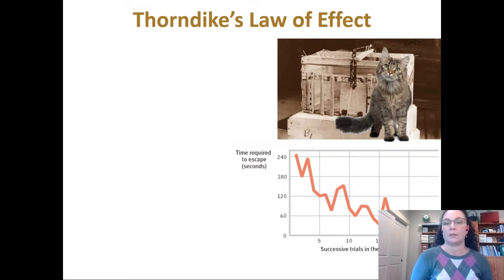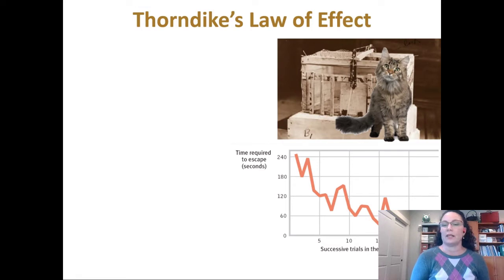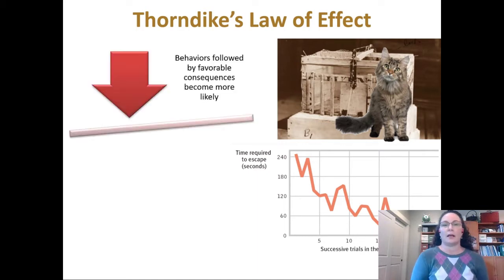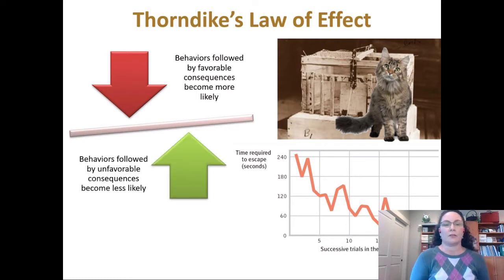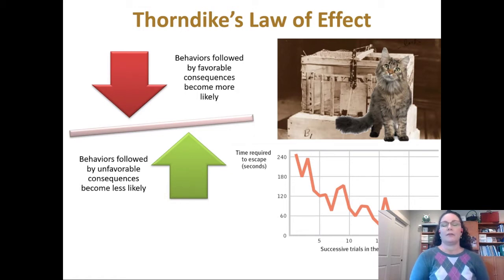What you see is it takes the cat less and less time to escape from the box on each trial. There are certain trials where it backslides and takes a little bit longer than the previous trial — presumably trying some other behavior and then remembering which one was the key. What Thorndike concluded is that behaviors followed by favorable consequences become more likely, and behaviors followed by unfavorable consequences become less likely.